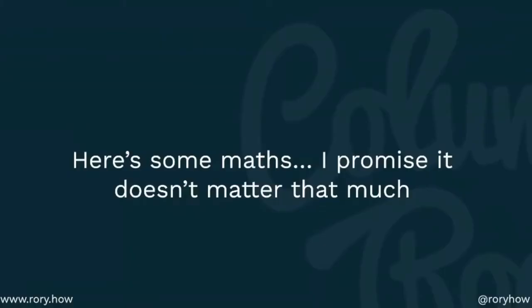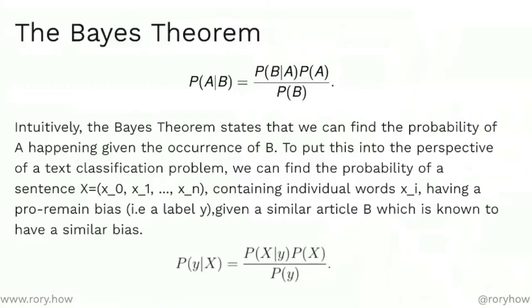Here's the mathematical part, and I'm going to rattle through this really quickly — A, because I don't want to get too stuck in the maths, and B, because I'm not very good at it. We have Bayes' theorem, which is a really simple probabilistic method of determining the probability of A given B. In this situation, we want to find the probability of a sentence having a certain political bias label Y, given a similar article B known to have a similar political bias. This is the baseline we can use to guess political bias at an article or document level.